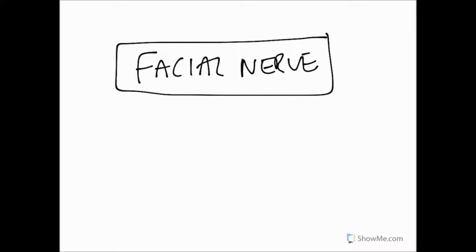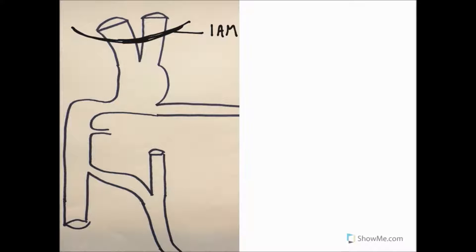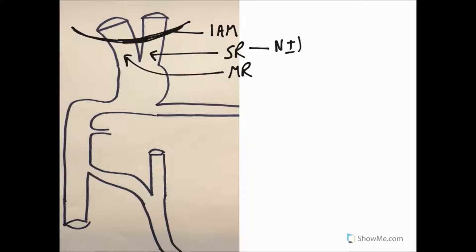We're going to start off by using the diagram, which is representative of what you'll find in the books. Here is our facial nerve root coming through a foramen called the internal acoustic meatus. The facial nerve has a sensory root and a motor root. The sensory root is also known as the nervous intermedius. The nerve comes together and at this point there is a swelling because of the sensory nerves contained within the facial nerve — this is called the geniculate ganglion.